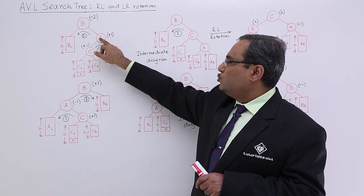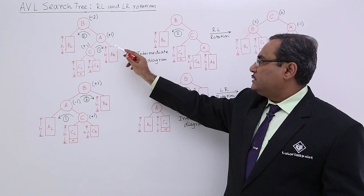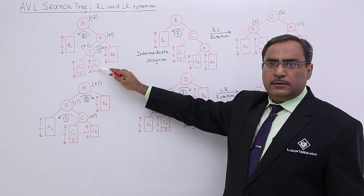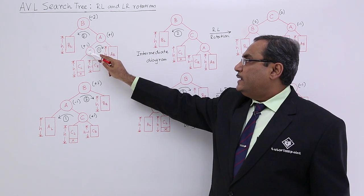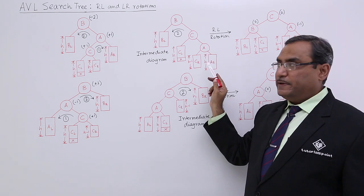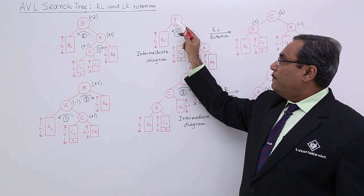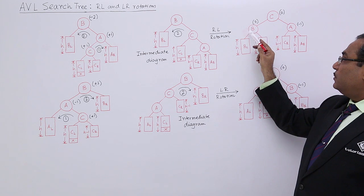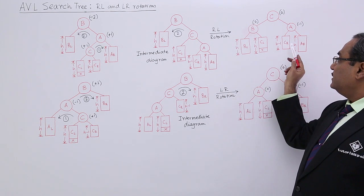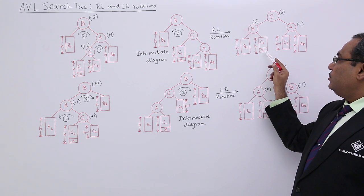So I am applying this rotation. C will be the root here for this particular sub tree. C will be the root, A will be the left child. This right sub tree will be coming down. This left sub tree will be going up. What about CR? That is lesser than A and greater than C, so CR will be coming down. Do not calculate the balance factors because it is the intermediate diagram. Now this rotation is pending: C will go up, B will come down with BL, A will go up with AR and CR.